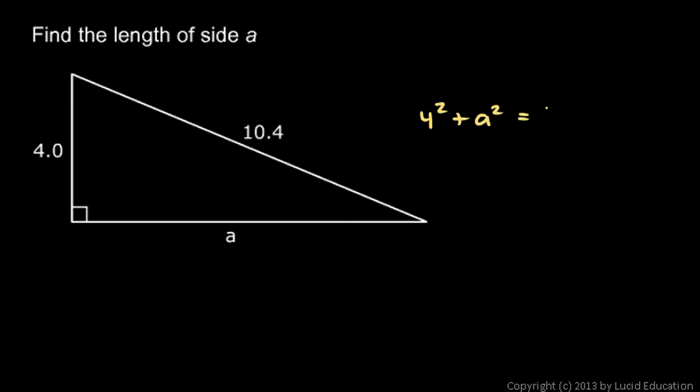And the hypotenuse is 10.4, and so we'll square that. And then I'm going to subtract 4 squared from each side, and I get a squared is 10.4 squared minus 4 squared, and those are just numbers.